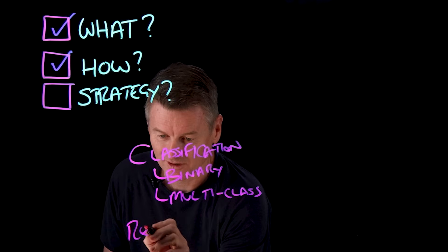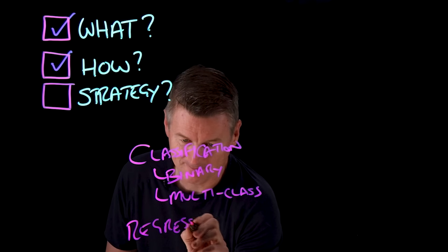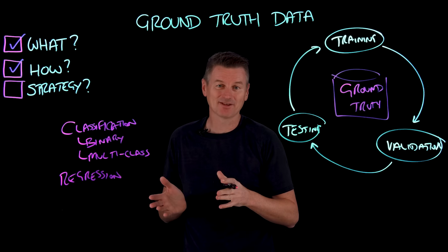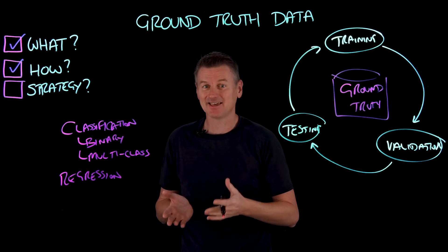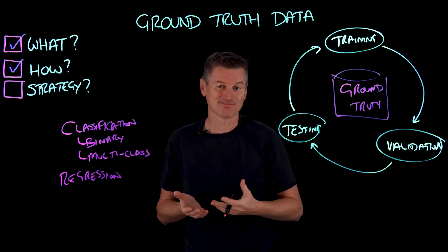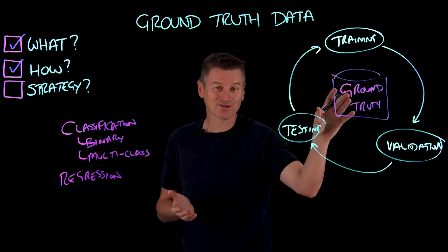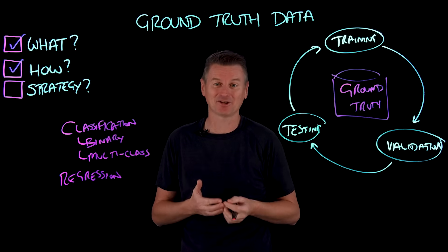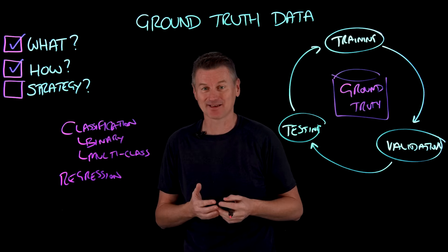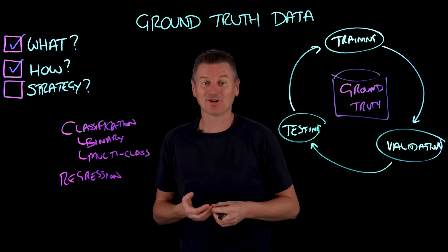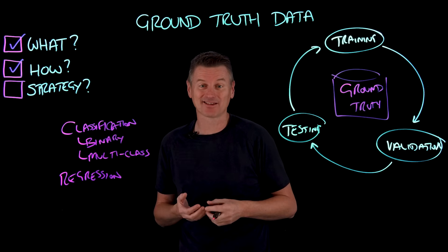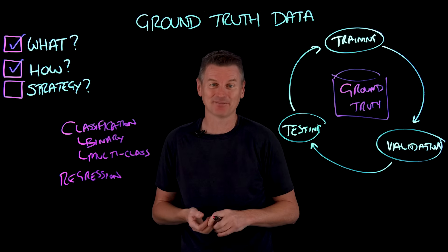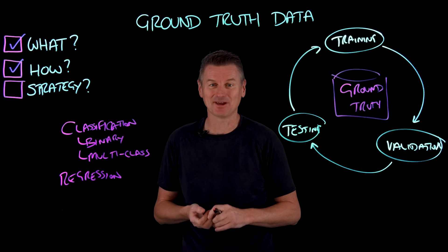There's also regression. In regression tasks, the model is predicting continuous values. Ground truth data represents the actual numerical outcomes that the model seeks to predict. For example, a linear regression model can forecast house prices based on a bunch of factors like square footage, number of rooms, and location.